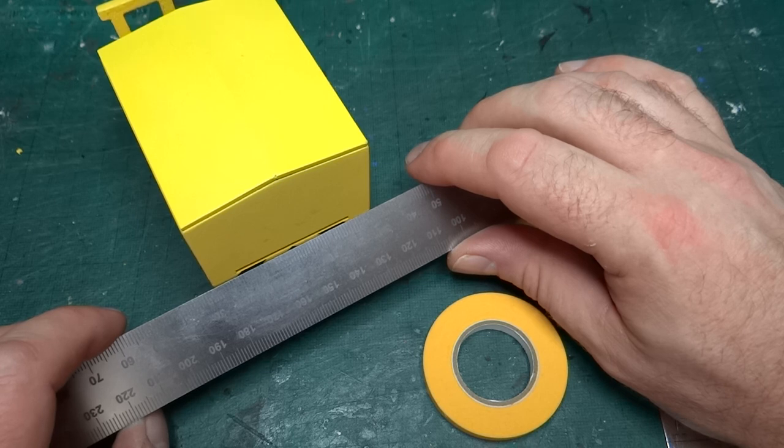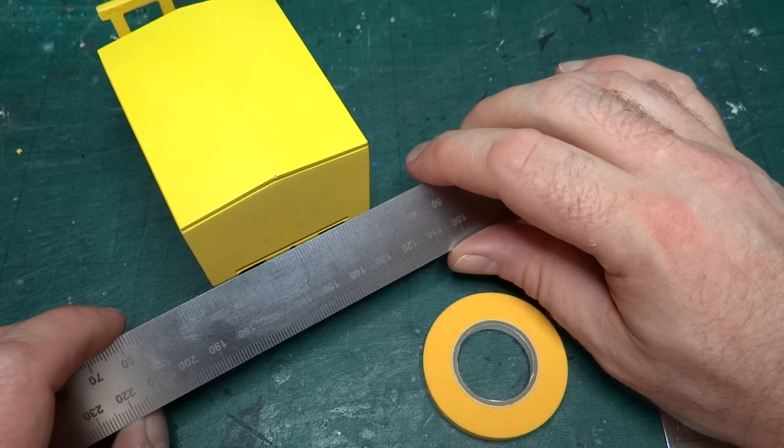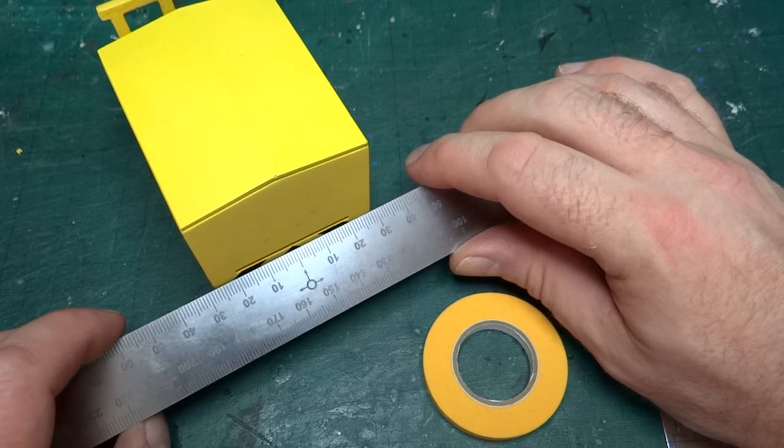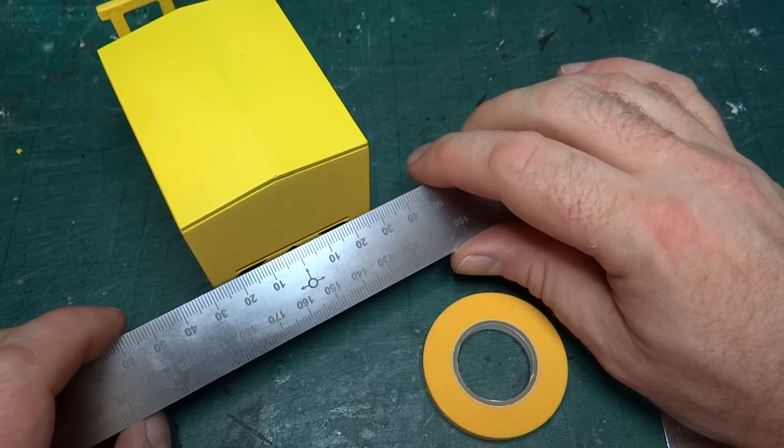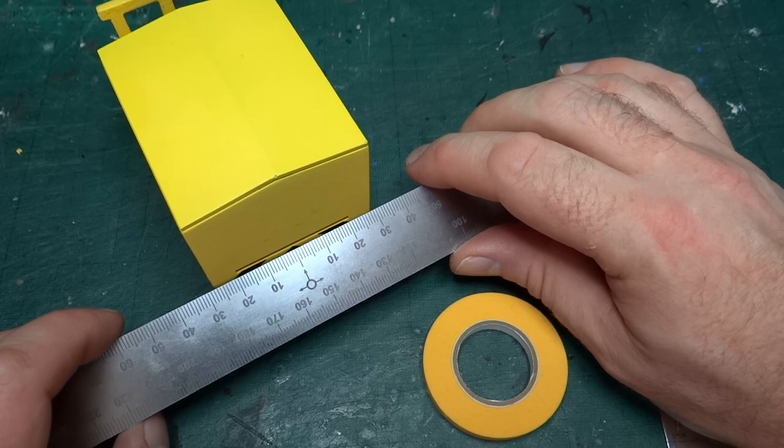And yeah, so there's about two millimetres on each side, and that made finding the middle really easy, and I just then marked it onto the masking tape that I'd put on with a pencil, and then lined everything else up.